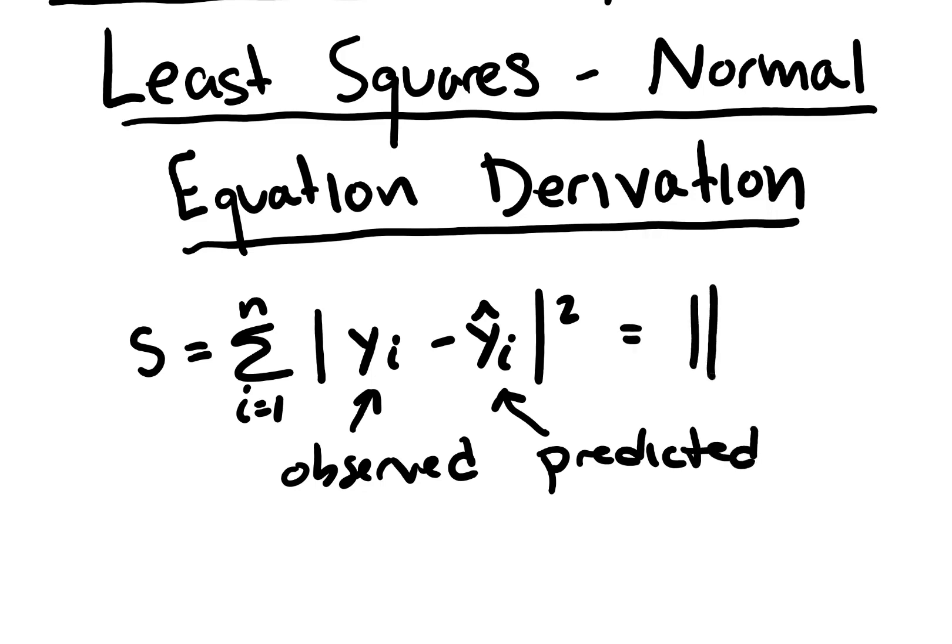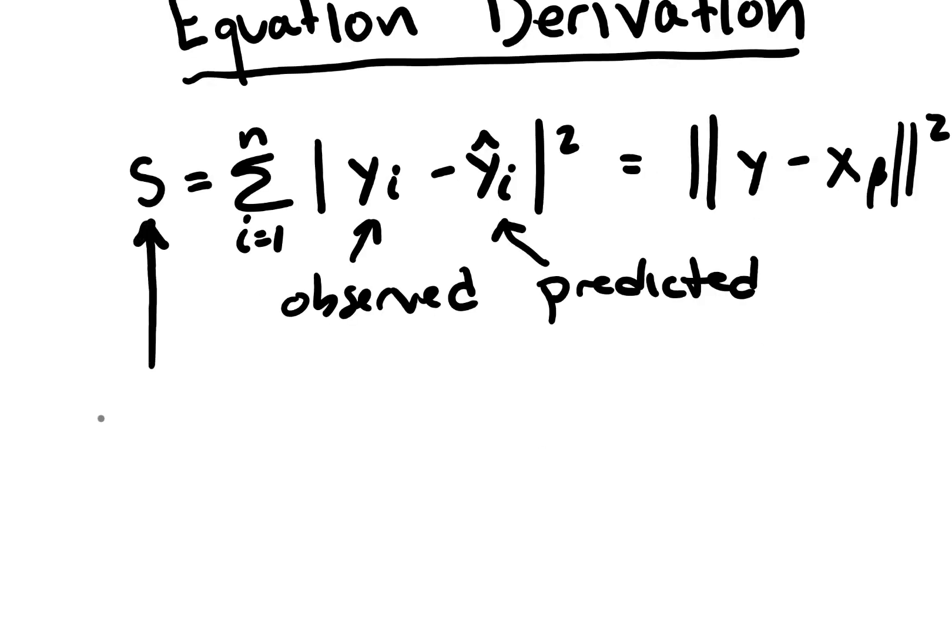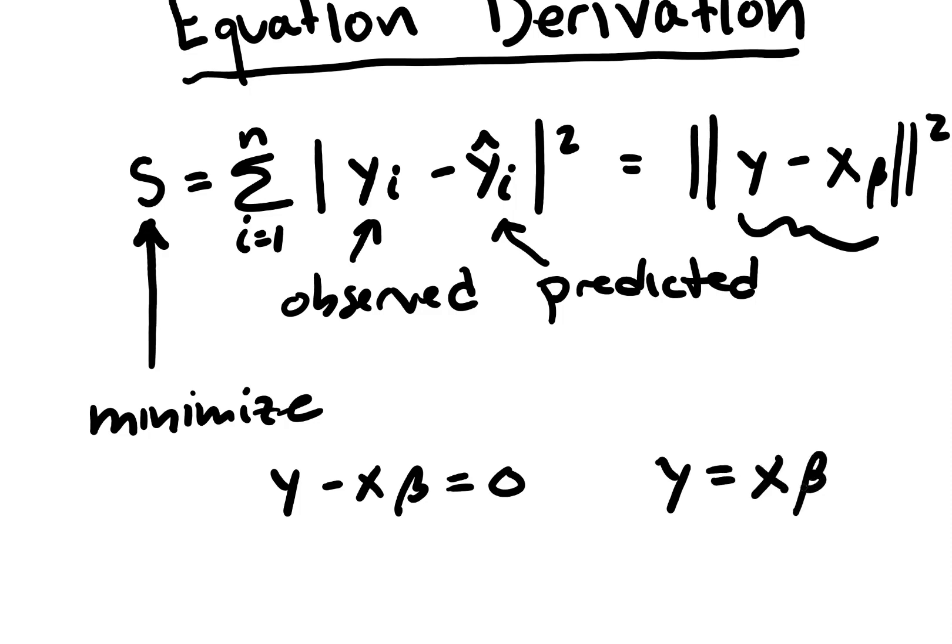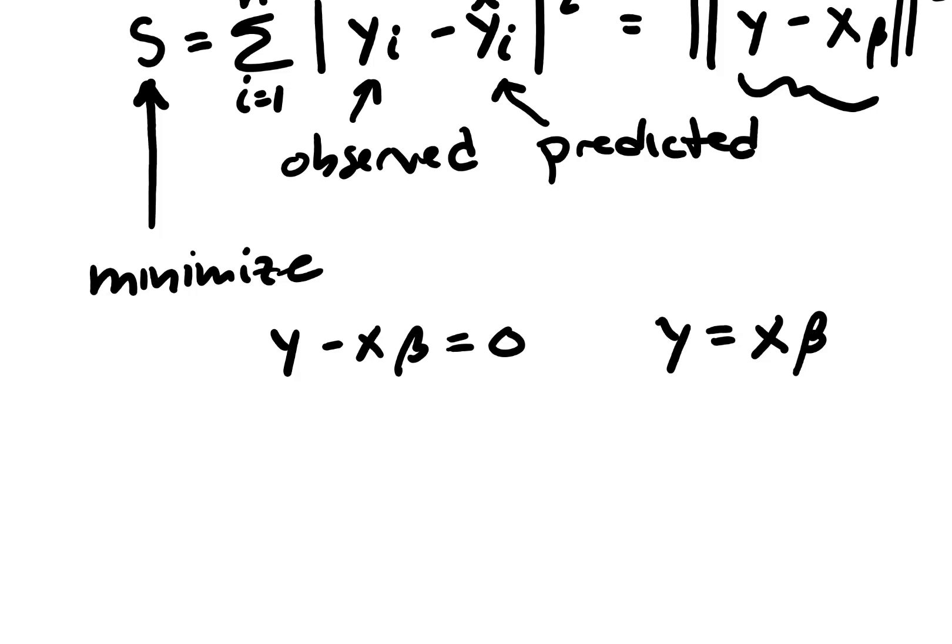And then this is going to be equal to y minus x beta squared. So what we're doing is we're minimizing the objective function. The way that we can do that is if y minus x beta is equal to 0, then that's minimized. So y minus x beta equals 0, which means y equals x beta. But in reality, we're never going to have zero error. So our model is never going to match the data perfectly. Really, what we're solving for is y is approximately equal to x beta.